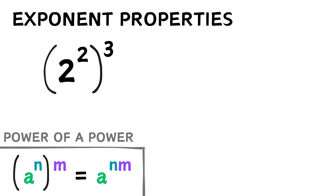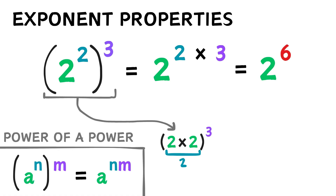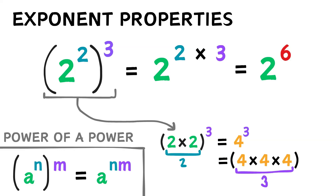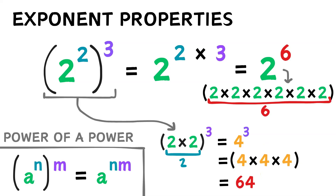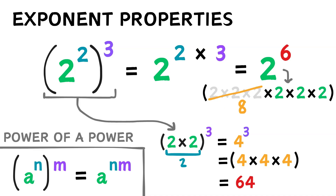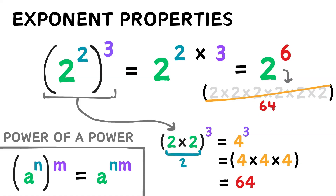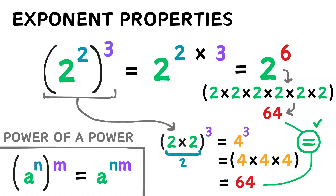What if we had 2 to the power of 2, to the power of 3? The power of a power property tells us this should equal 2 to the power of 6. 2 to the power of 2 is 4, and 4 to the power of 3 is 64. What is 2 to the power of 6? 2 times 2 is 4, times 2 is 8, times 2 is 16, times 2 is 32, and times 2 one more time is 64. So these indeed match.